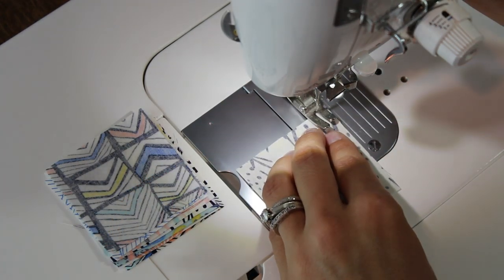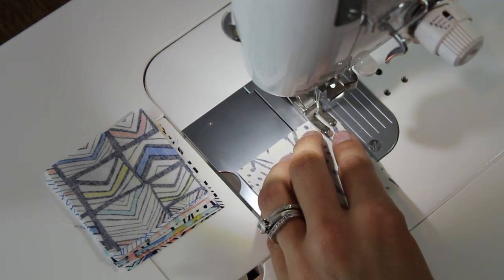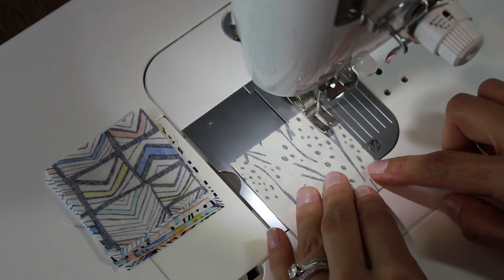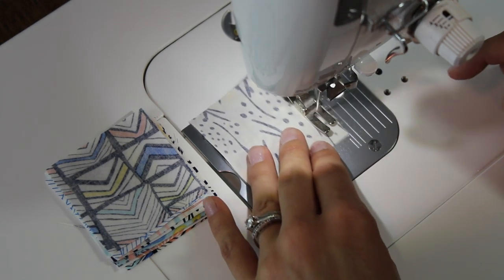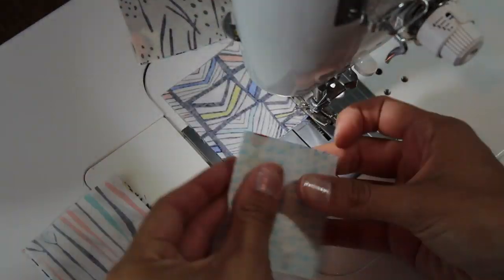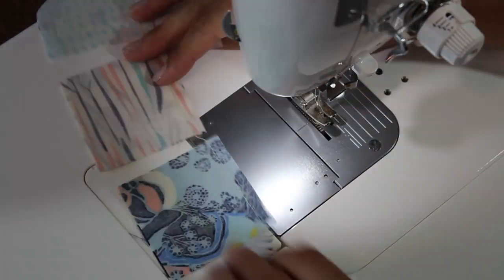Along that right side, we're going to place our right sides together and use a quarter inch seam allowance to stitch all the way down this one side. And I'm going to show you how to do this to save a little bit of time. I'm using the marking there on my plate, on that metal plate on the bottom. And then we're going to chain stitch. So we're not going to cut our threads or anything in between.